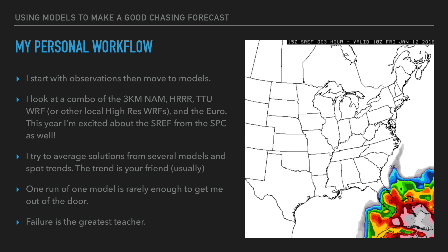One run of one model is rarely enough to get me out the door. If the HRRR has been showing no storms all day and then suddenly at 20Z there's a big supercell, I'm going to wait for the 21Z run to see if it confirms. I may be packing my car ready to go, but I won't head out on one run alone. Failure is the greatest teacher — you're going to mess up days in storm chasing. Don't just gloss over those; go back and look at what did you see, why did you make these decisions, and what did you miss. That 'what did I miss' will improve you every time. Always be humble and willing to teach yourself from your failures.